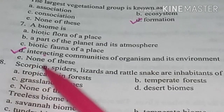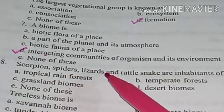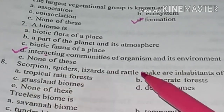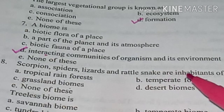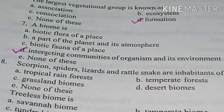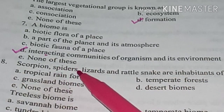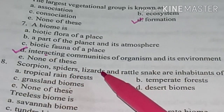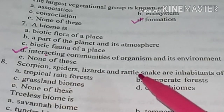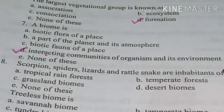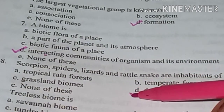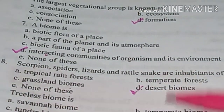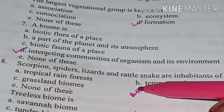Scorpion, spiders, lizards and rattlesnake are inhabitants of answer option D: Desert biomes.